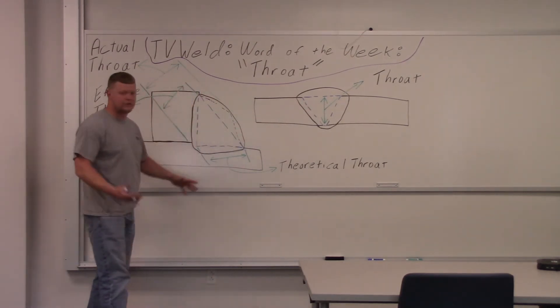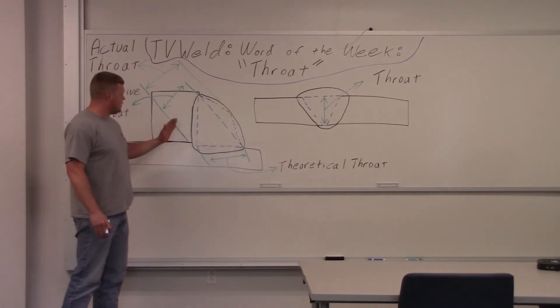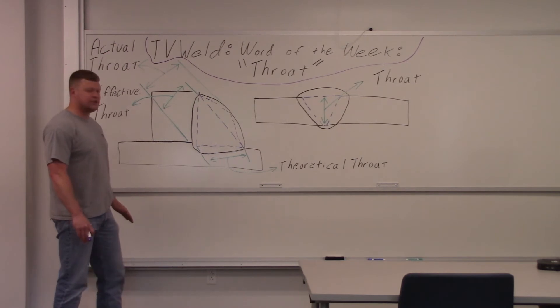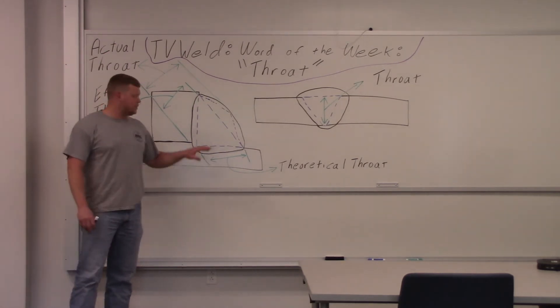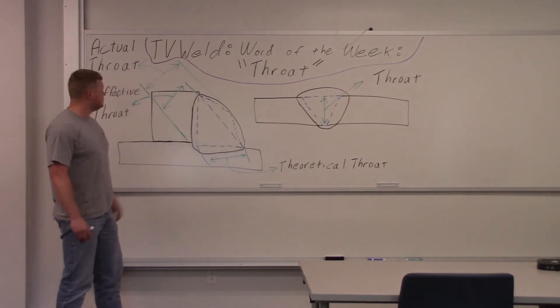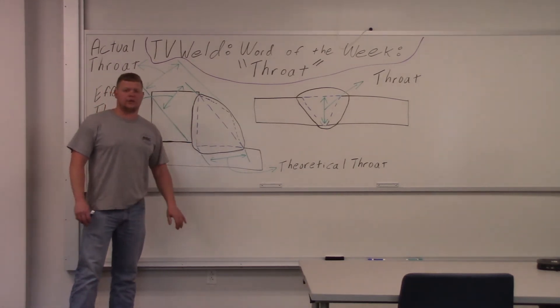With the fillet weld, if there's no throat, there's no weld. It's the integrity of the entire fillet weld. So what we'll do now is we'll look at a couple of etches of some fillet welds here. We can kind of point out where these three throats are. So we'll pull it up on the big screen here and we'll take a look at those.